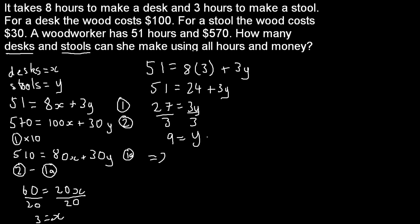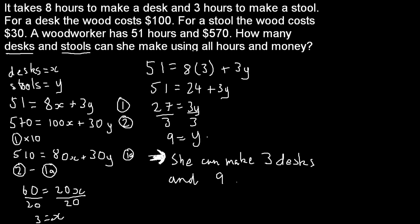Now this is a worded question, so let's use a worded answer. Note that this symbol here is an arrow, not an equals sign — let me make that a bit clearer. She can make 3 desks and 9 stools. And that's it for today. I hope that was useful for you, and I'll see you next time.